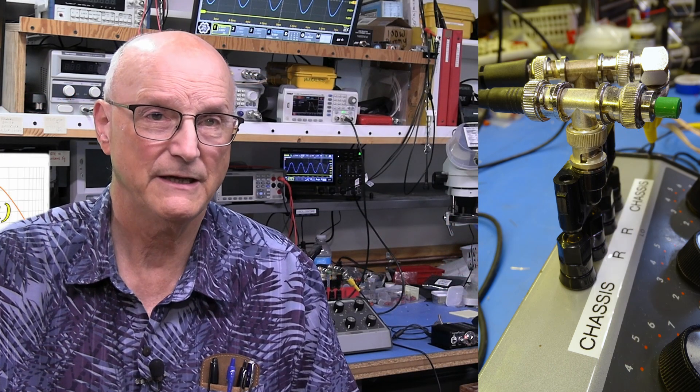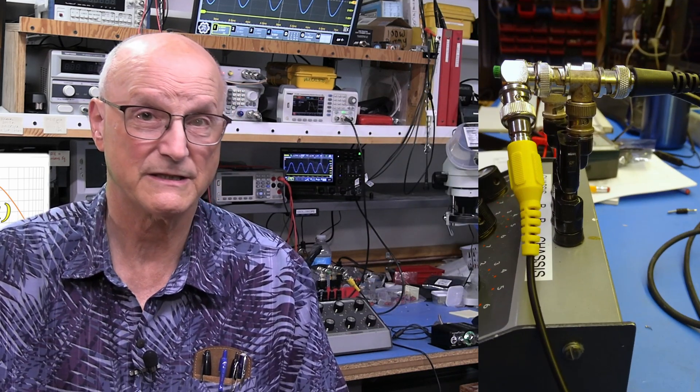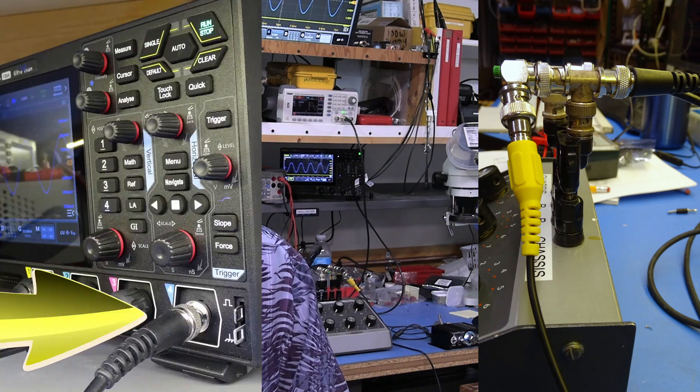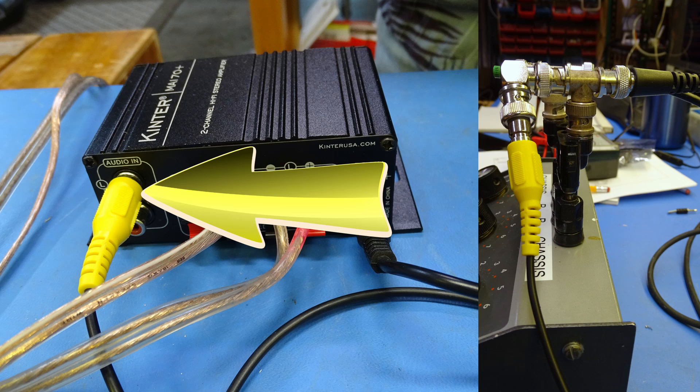The BNCT is connected to my resistance decade box. Now, the other side of the resistance decade box is connected to the input of the scope and to the input of the amplifier. We will be using the scope to monitor the voltage applied to the input of the amplifier.